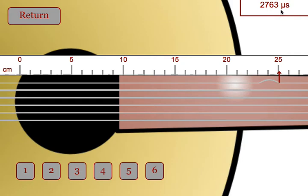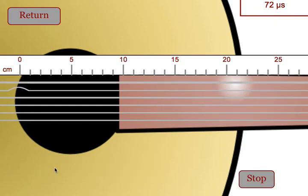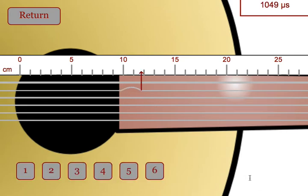They could use these two values to find the speed. They could then do this for each of the different strings and examine how the linear density of the string affects the speed.